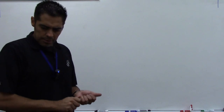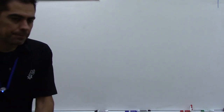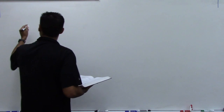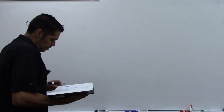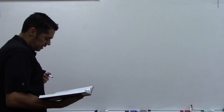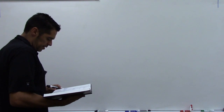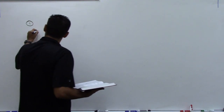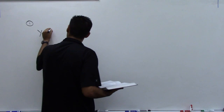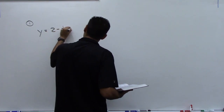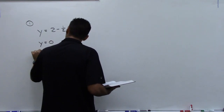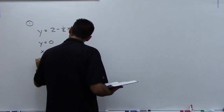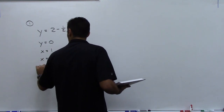We're working on section 7.2, starting with number 1. Find the volume of the solid obtained by rotating the region bounded by the given curves about the specified line. Sketch the region, the solid, and a typical disc or washer. We start with y equals 2 minus one-half x, y equals 0, x equals 1, x equals 2, and we're rotating about the x-axis.